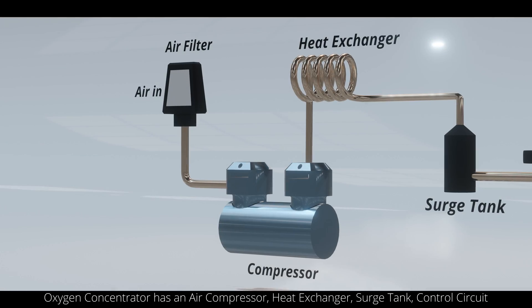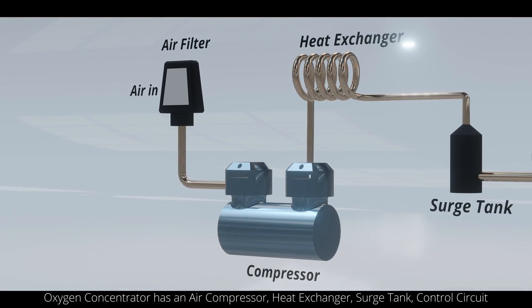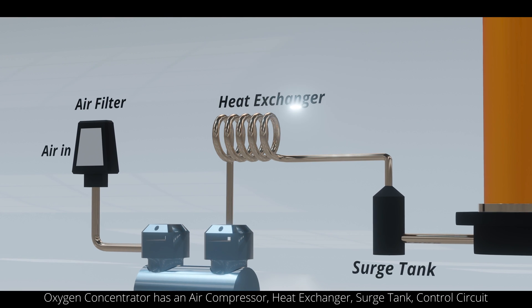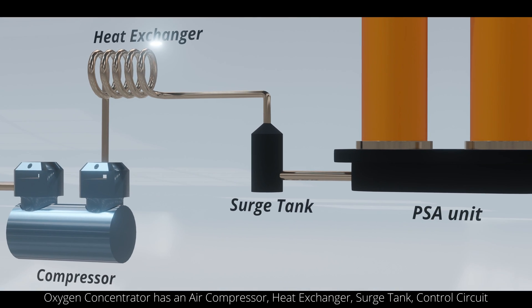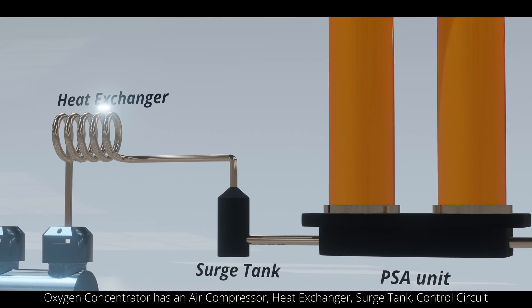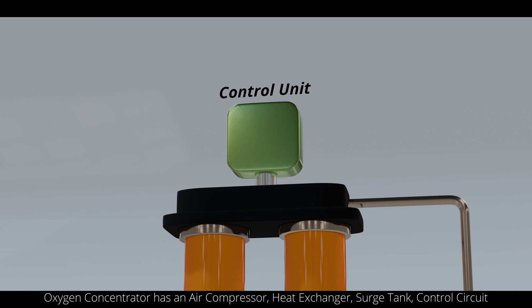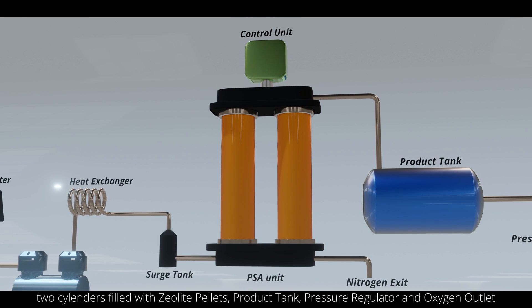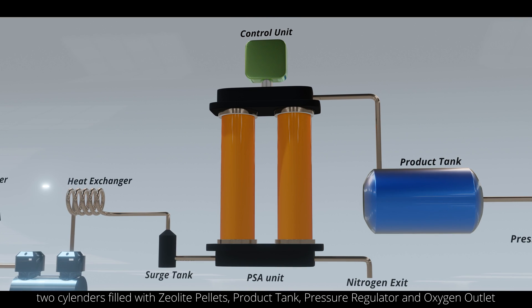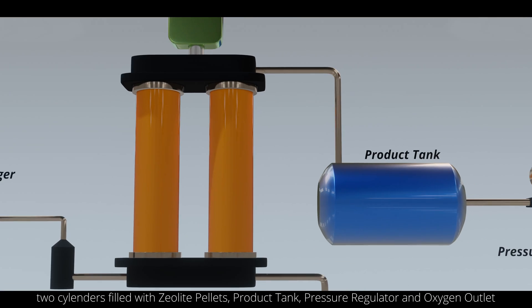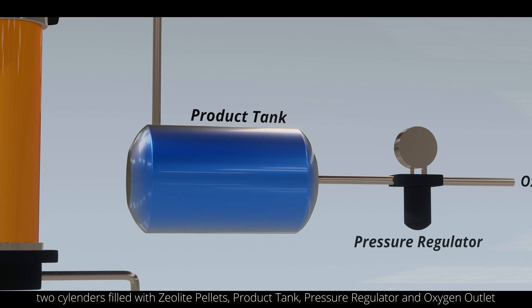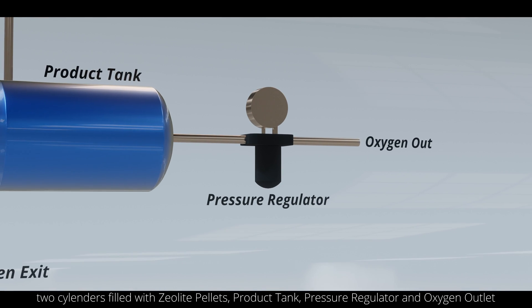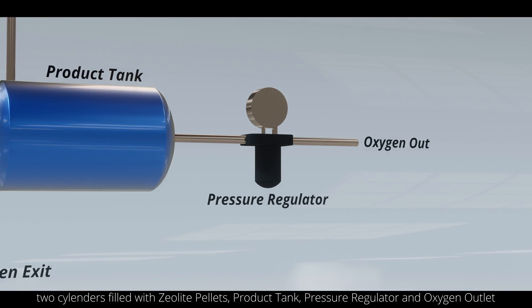An oxygen concentrator has an air compressor, heat exchanger, surge tank, control circuit, two cylinders filled with zeolite pellets, a product tank, a pressure regulator, and an oxygen outlet.